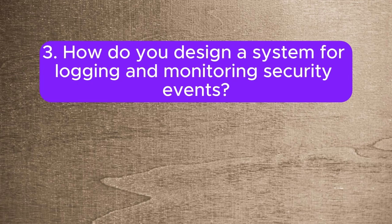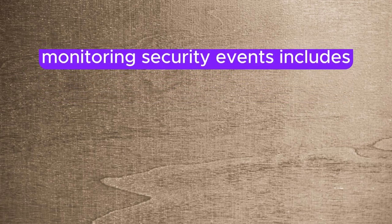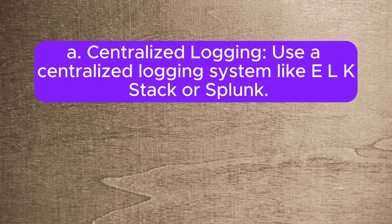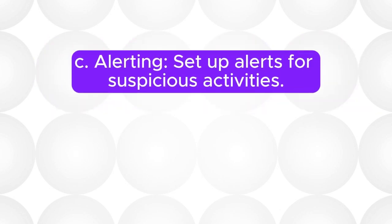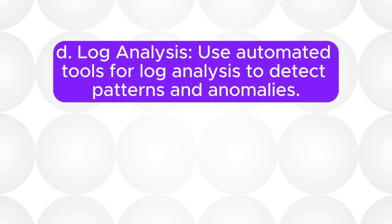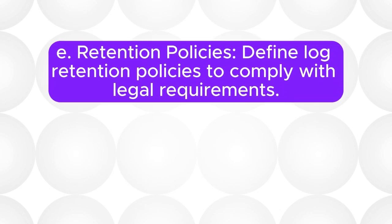Question 3: How do you design a system for logging and monitoring security events? A system for logging and monitoring security events includes: (A) Centralized logging — use a centralized logging system like ELK Stack or Splunk; (B) Real-time monitoring — implement real-time monitoring tools like SIEM (Security Information and Event Management); (C) Alerting — set up alerts for suspicious activities; (D) Log analysis — use automated tools for log analysis to detect patterns and anomalies; (E) Retention policies — define log retention policies to comply with legal requirements.